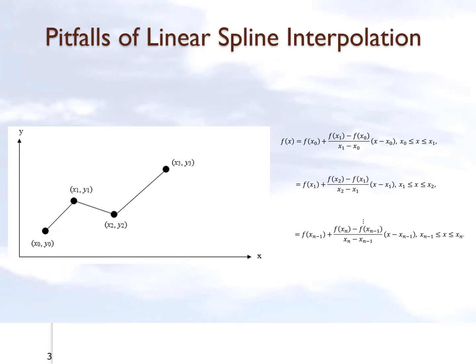Before we talk about quadratic spline interpolation, let's recall what we learned in linear spline interpolation. In linear spline interpolation, we took the data points given consecutively from one point to another and simply drew a straight line. One of the things you can observe is that at an interior data point, the slope coming one way is negative and going the other way is positive — that is an artificial change in slope, a discontinuity in the slope at the interior data points.